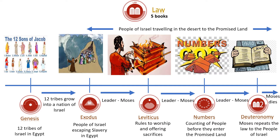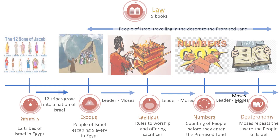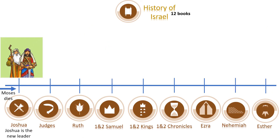In the book of Deuteronomy, Moses repeats the law to the Israelites about how to live their lives and how to worship God. Keep in mind they are still wandering in the desert — around 40 years or so. However, at the end of the book of Deuteronomy, Moses dies even before they enter the promised land.